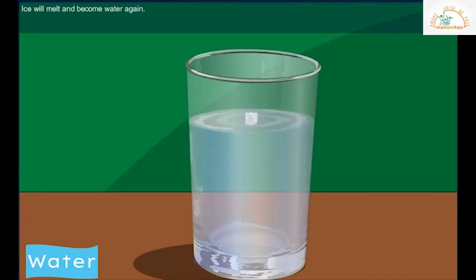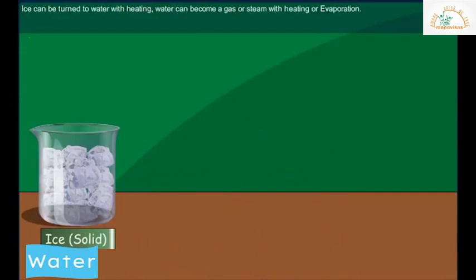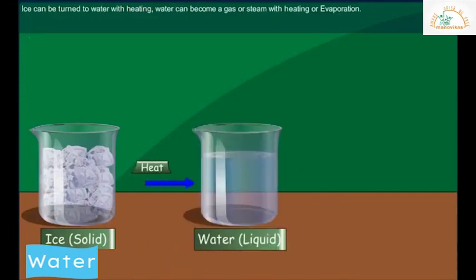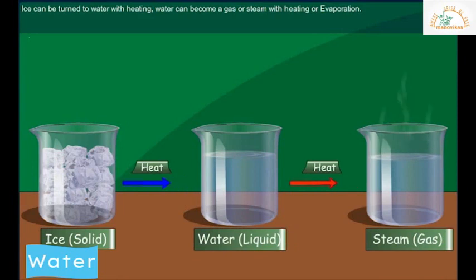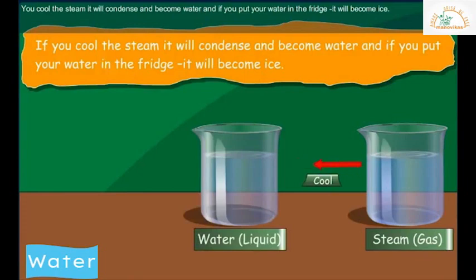Now if you heat the water it will evaporate in the form of steam. Now look at that. Together, ice can be turned into water with heating. Water can become a gas or steam with heating or evaporation. If you cool the steam, it will condense and become water, and if you put your water in the fridge it will become ice.